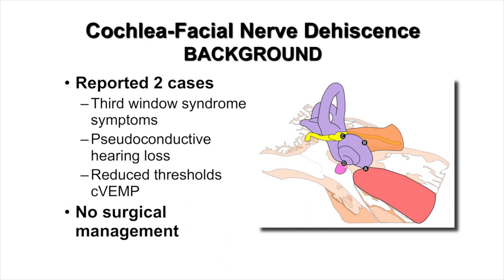Label D represents a hypothetical cochlea jugular bulb dehiscence, though this has not been observed or reported. What is known to exist is a posterior semicircular canal jugular bulb dehiscence.